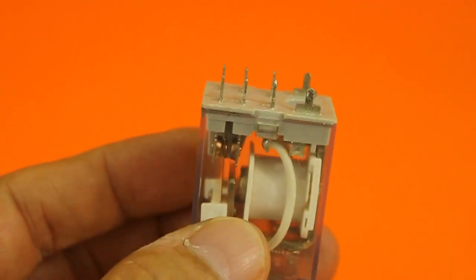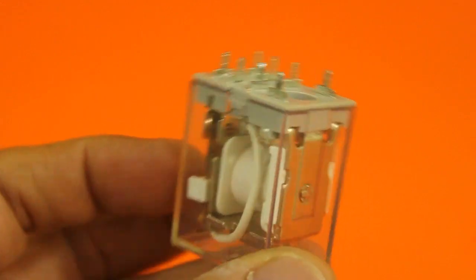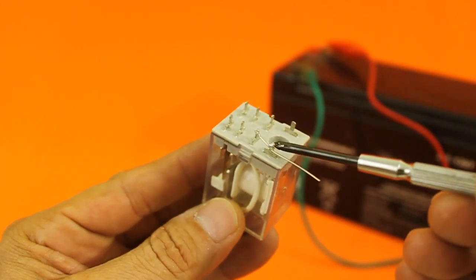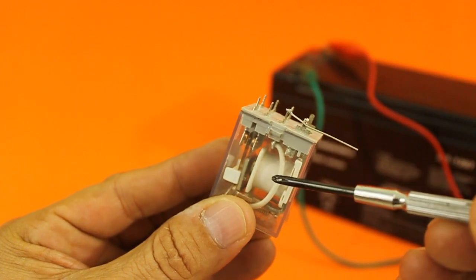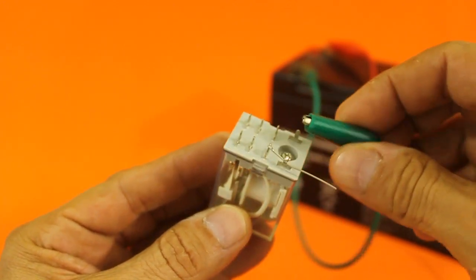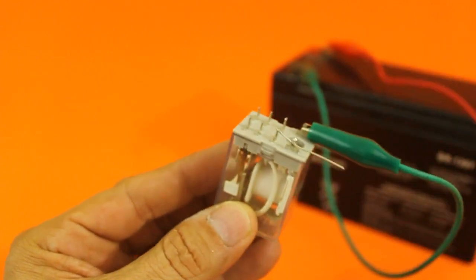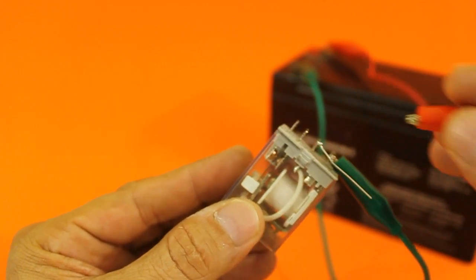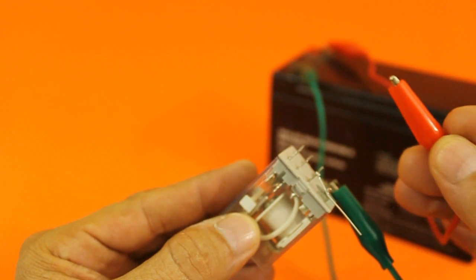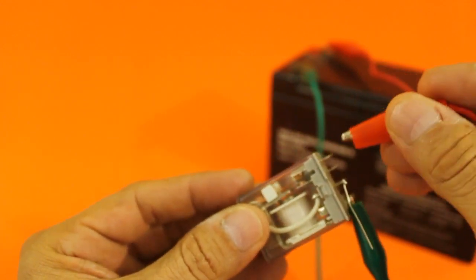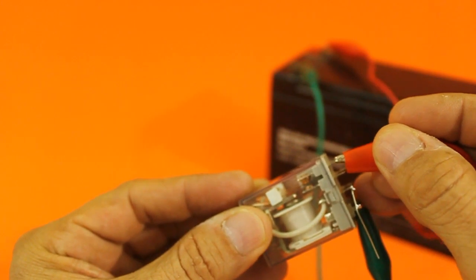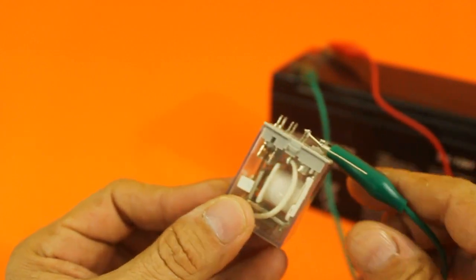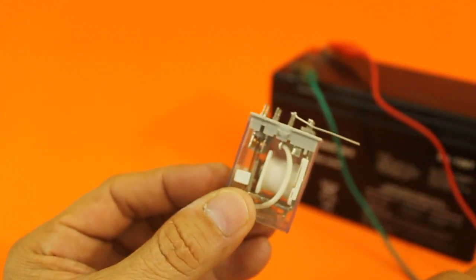The first thing we need to do is to connect the relay as an oscillator. All we need to do is to join one terminal of the coil to the common terminal of the contacts. Now if I connect the battery to the relay coil we can see that it works as normal, but if I connect to the normally closed contact, the relay works as an oscillator at a frequency of several hundred Hertz.